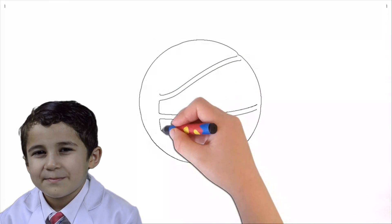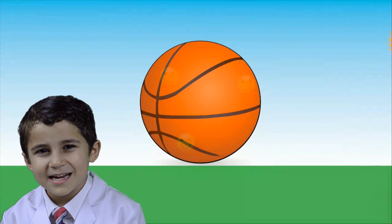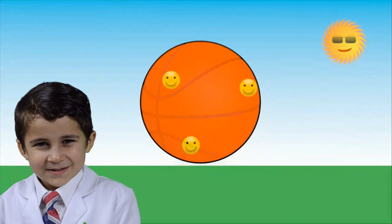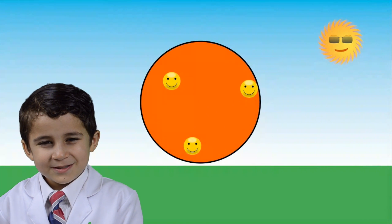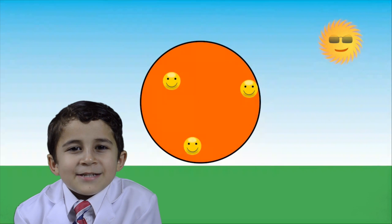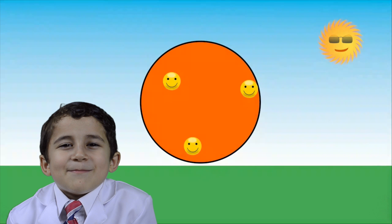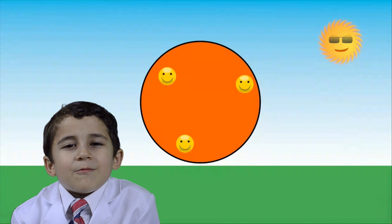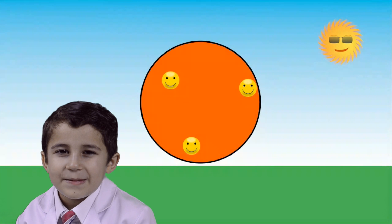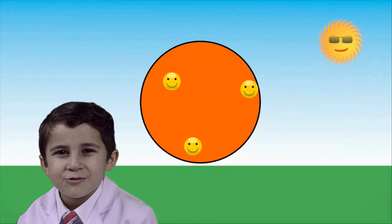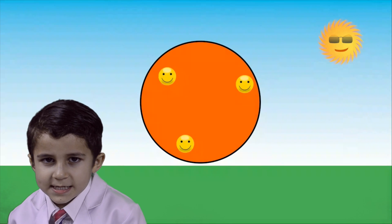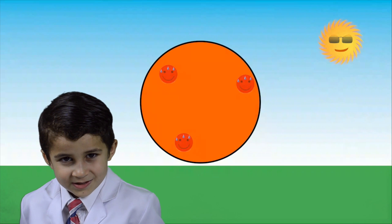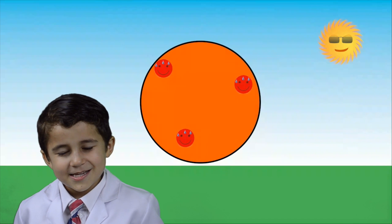Why is that? If we can see inside a basketball, then we can see what's happening to the air particles. But first, let us define pressure. Pressure is when a force is applied to an area. In the case of a basketball, the pressure is because all the air particles hit the wall area with force. When the basketball is cool, the air particles move very slowly and lazily. When the sun shines on it, the air particles start to get hot and move really crazy.